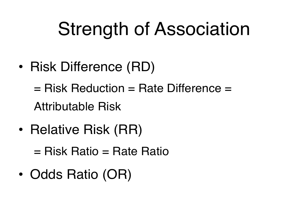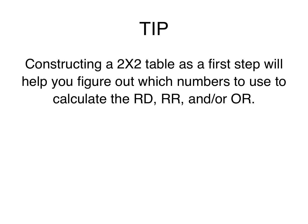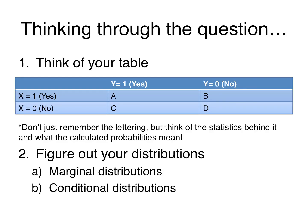The chi-square statistic will tell you whether two variables are dependent but will not tell you the direction and strength of the association. To determine those, we need to calculate statistics like the risk difference, relative risk, or odds ratio. The risk difference is also known as the risk reduction, rate difference, and attributable risk. The relative risk is also known as the risk ratio and rate ratio. For the sake of this course, you can assume these terms mean the same thing.